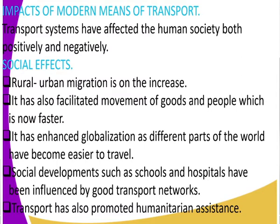Social developments such as schools and hospitals have been influenced by a good transport network. When we have a good transport network, we get good hospitals, good schools, and good marketplaces. Those are some of the social developments. Transport has also promoted humanitarian assistance — for example, during floods, the rescue team is able to get to the affected area within the shortest time possible.